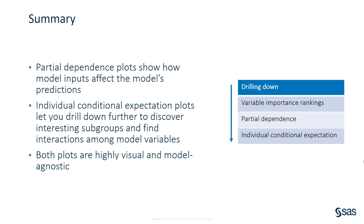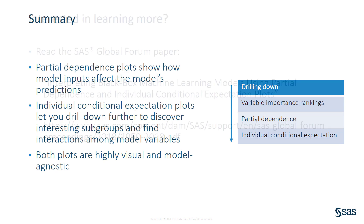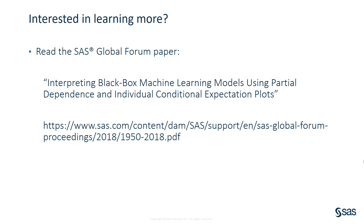To summarize, PD and ICE plots can help you understand how black box models work. PD plots show you how values of model inputs affect the predictions that the model makes. With ICE plots, you can drill down further to discover interesting subgroups and interactions among model variables. Both types of plots are highly visual and model agnostic, meaning they are relatively simple to understand and can be used with any supervised learning model. To learn more about PD and ICE, and in particular how to create them in SAS, please consult the SAS Global Forum paper, 'Interpreting Black Box Machine Learning Models Using Partial Dependence and Individual Conditional Expectation Plots.' Thank you for watching.